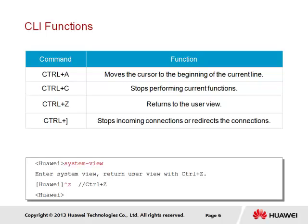We can see an example at the bottom where we've transitioned to the system view from the user view, and we've used Control Z to actually transition back to the user view. Additionally, Control and the right bracket is used to exit from a connection, such as in the case of remote connections like Telnet.